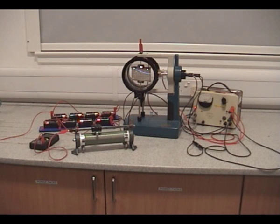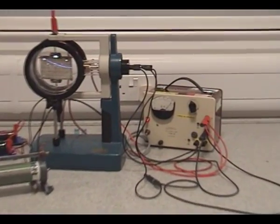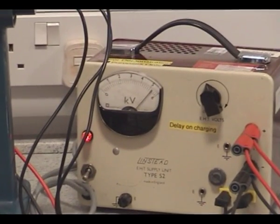So the beam of electrons, the positive plate is the top plate, negative plate at the bottom. What's the voltage across that? 5,000 volts, which we can hopefully see on the EHT supply.